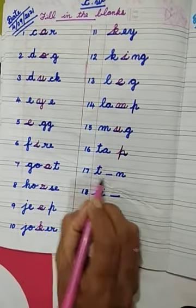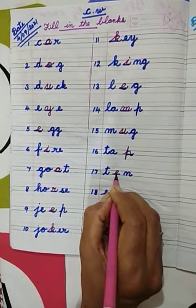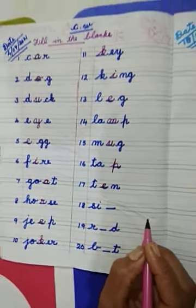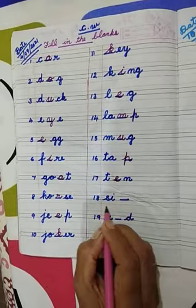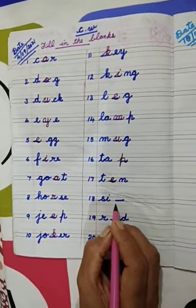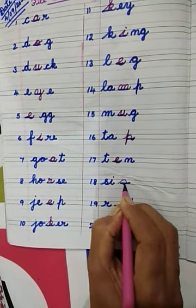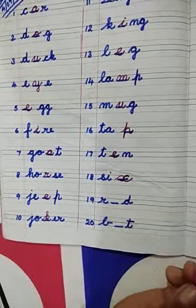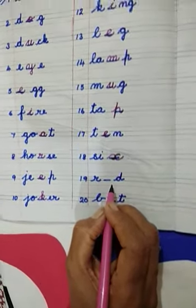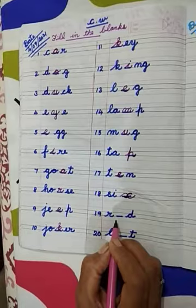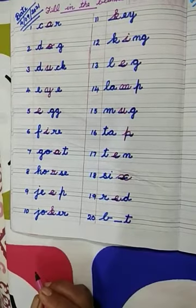Number 17: T-N. Which letter is missing here? Letter E is missing here. We have to write here letter E and complete the weight ten. Number 18: S-I-D. Last letter is missing. Spelling of six: S-I-X. Which letter is missing here? Letter X. We have to write here letter X. Number 19: R-D. Red. Spelling of red: R-E-D. Which letter is missing here? Very good. Letter E is missing here. We have to write here letter E and complete the weight red.